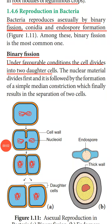There are both asexual and sexual reproduction seen in bacteria. Mostly, bacteria reproduce asexually. Asexual reproduction is done by binary fission, conidia, and endospore formation. The most common among them is binary fission, which takes place during favorable conditions.